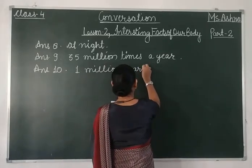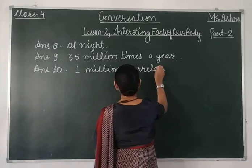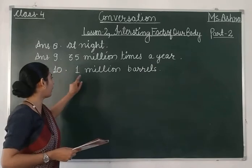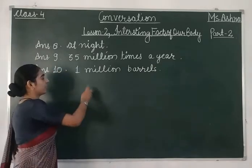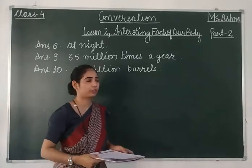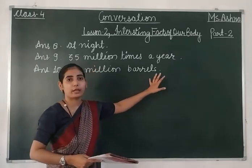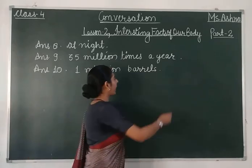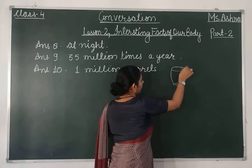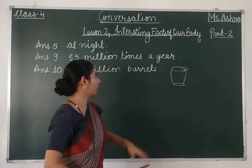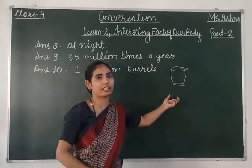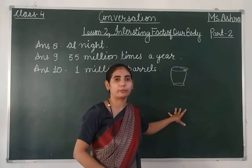That's B-A-R-R-E-L-S — 1 million barrels. In your sample language, 1 million equals 1,000 barrels. What is a barrel? A barrel is like a cask — a cluster-type container. You can Google the word 'barrel' and you will see many pictures, then you will know what a barrel is.